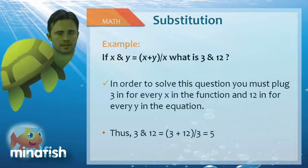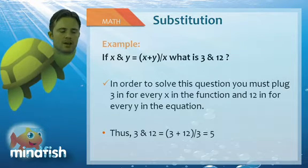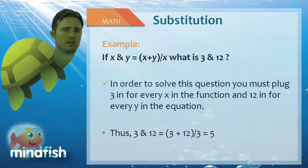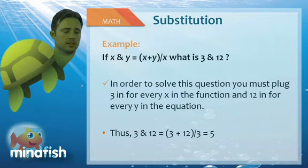The more complicated these are generally implies that they have more variables in them. It doesn't matter. If it was a and b here, we would just be a plus b divided by a. It doesn't matter whether it's variables or numbers. It's still a straight substitution question.